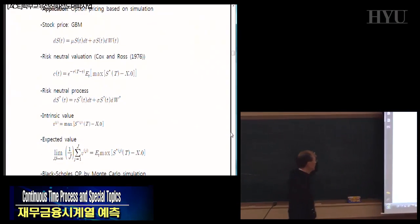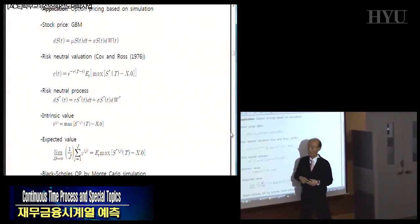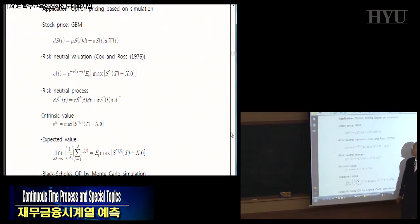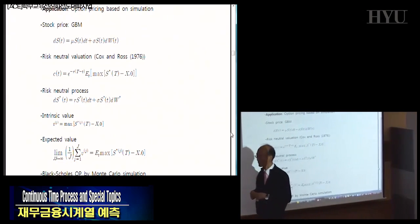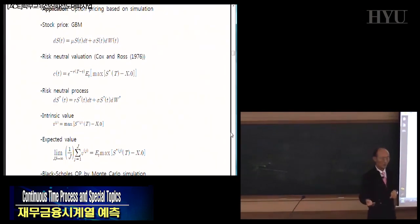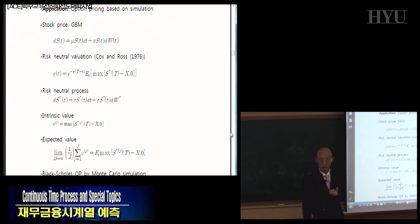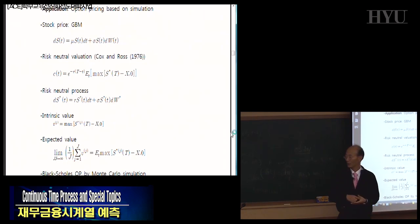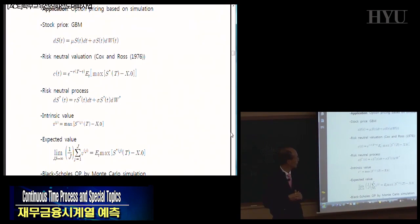Here is an application. We start from the assumption about stock price. In this discussion, we introduce two different probability spaces. One is the physical measure — for example, when rolling a die, the probability of seeing any value is one-sixth. We call that the physical measure. There is also a different, objective measure or risk-neutral measure used in asset pricing.